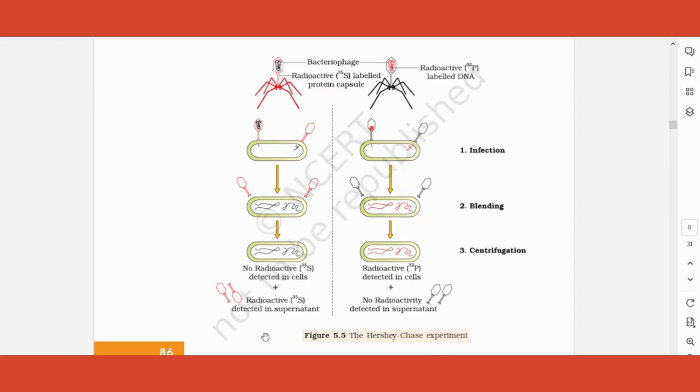The leftover supernatant had no radioactivity in this case. In the other case, sulfur is not found in the cell. That means DNA is the genetic material, protein is not.